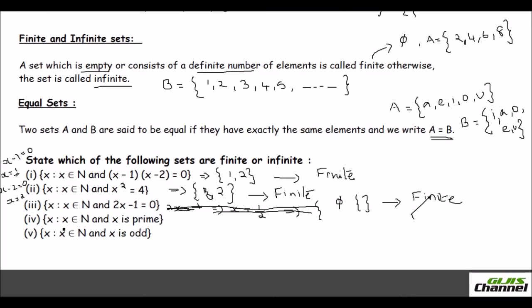Now the fourth one, it says x is a natural number and x is a prime number. So natural number starts with 1. So your set will start from 1. You can list out the prime numbers: 1, 2, 3, 5, 7, 11. It keeps going because they haven't said till how much you have. So this is infinite because you don't know how many elements you have in that set. So it is an infinite set.